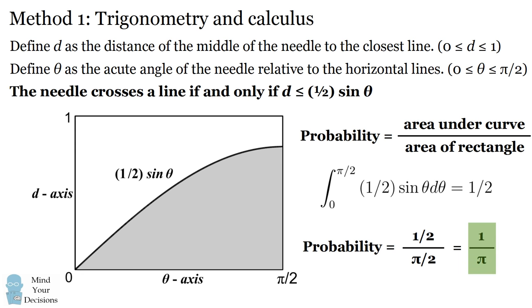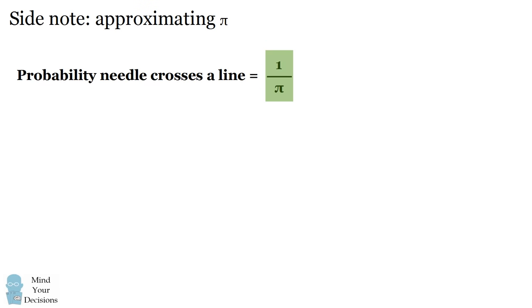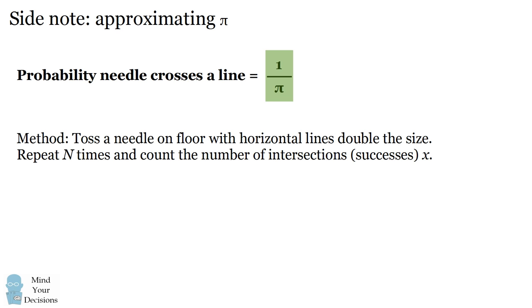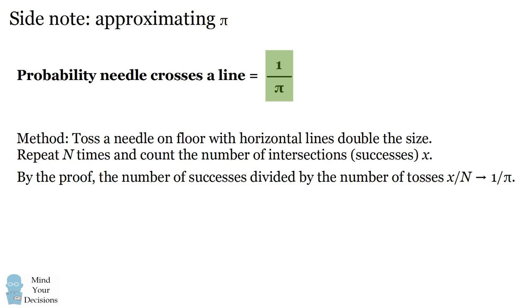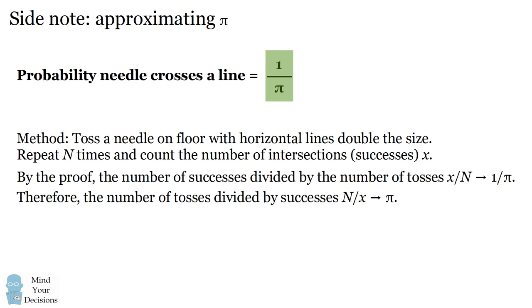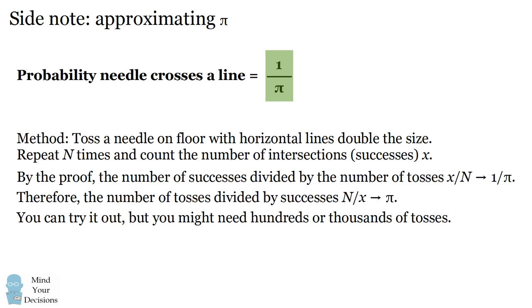It's kind of fun that the constant pi appears in this problem. This gives us a numerical and practical way to approximate pi. If you drop a needle on a floor with horizontal lines that are double the length of the needle, and repeat the experiment n times counting the number of intersections x, then x divided by n will approach one divided by pi. So the reciprocal — the total number of trials divided by the number of successes — gives an approximation for pi. You might need hundreds or thousands of tosses to get any accuracy, but it is a physical way to approximate pi.